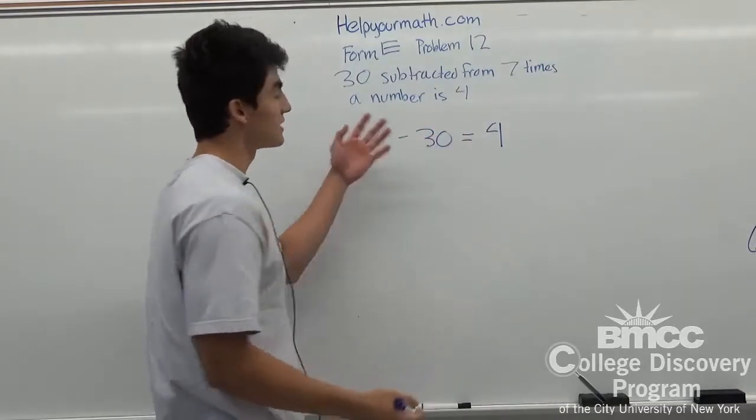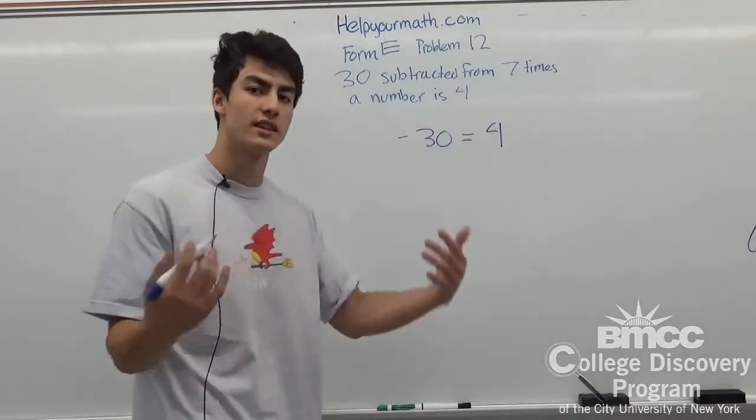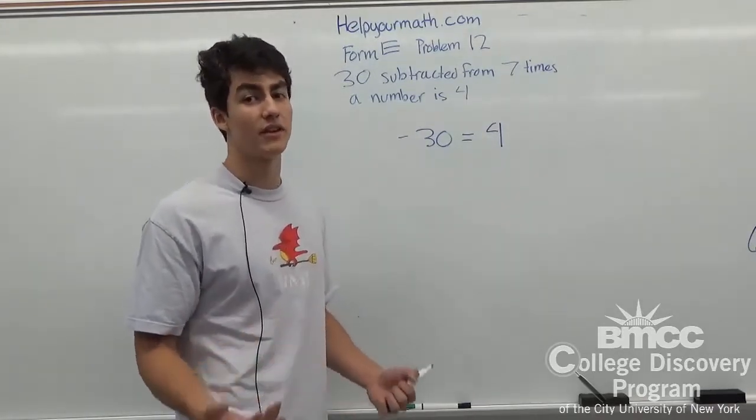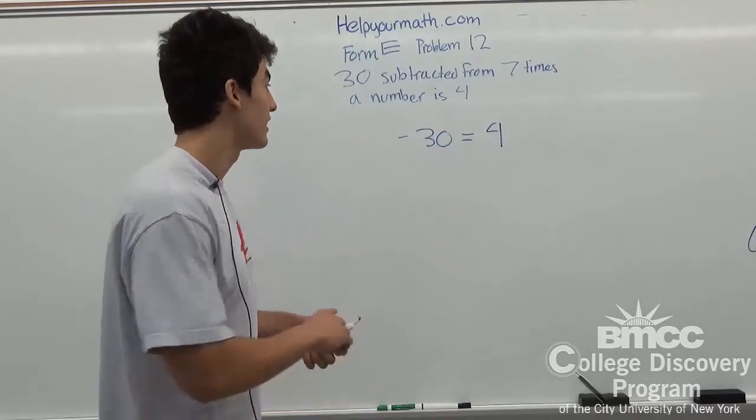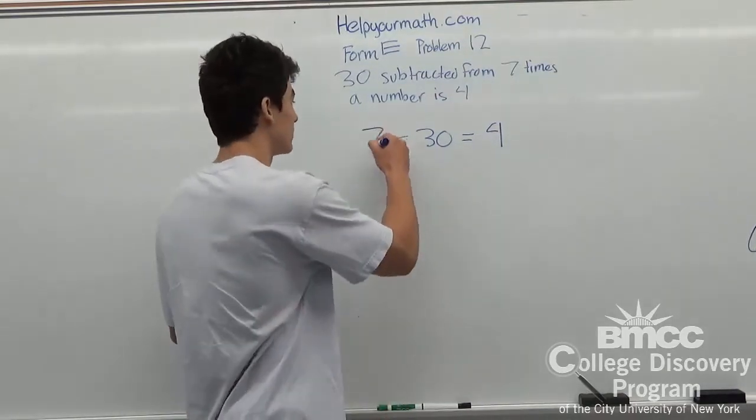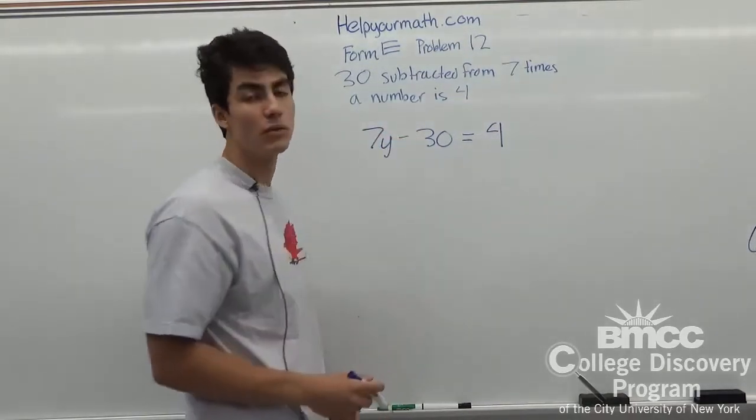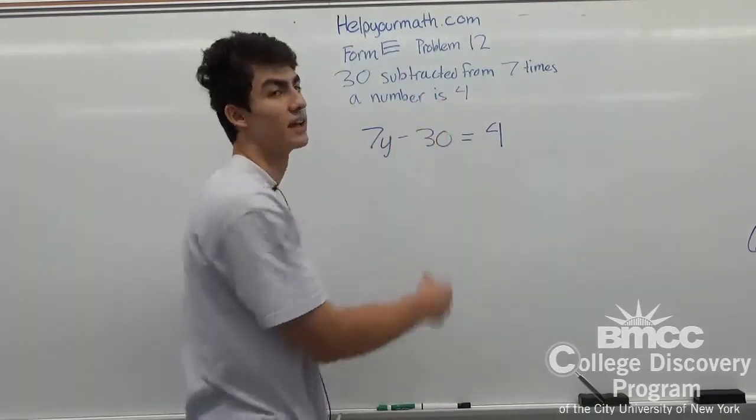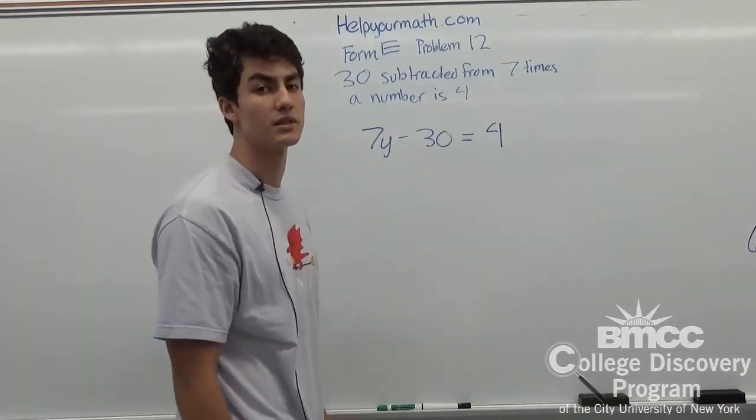And when it says 7 times the number, what I'm usually thinking is about a variable. A variable can stand for any number. So let's say 7 times a number, y. So 7y minus 30 would equal 4, which is the same thing as 30 subtracted from 7 times the number is 4.